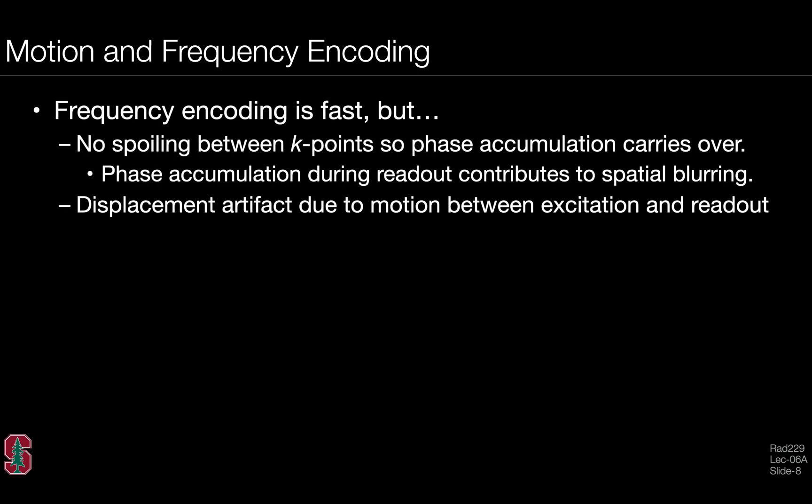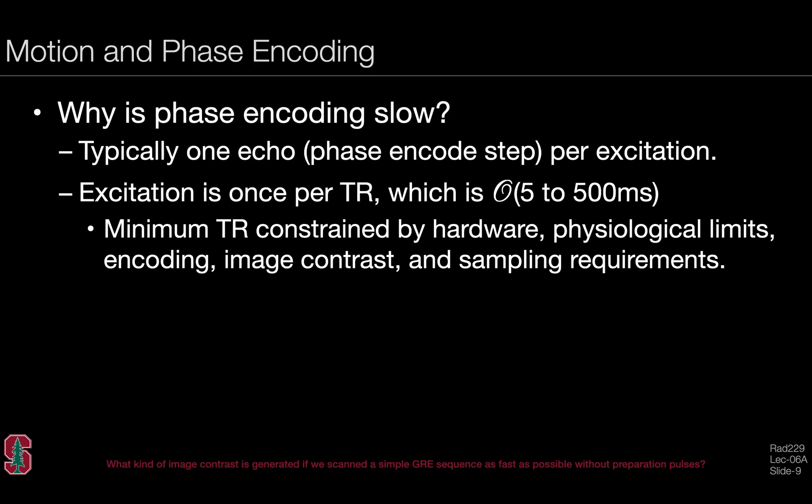Frequency encoding is fast, but there's also no spoiling between the K-points. Phase accumulation carries over. Any phase accumulation during readout will actually contribute to spatial blurring. Mathematically, we can see this as a broadening of the point spread function. You also can incur a displacement artifact due to motion between excitation, which happens at the beginning of the TR, and the time of readout, or the echo time, which occurs later in the TR. The time difference between excitation and readout compounds with the underlying velocity to lead to a displacement artifact of spins.